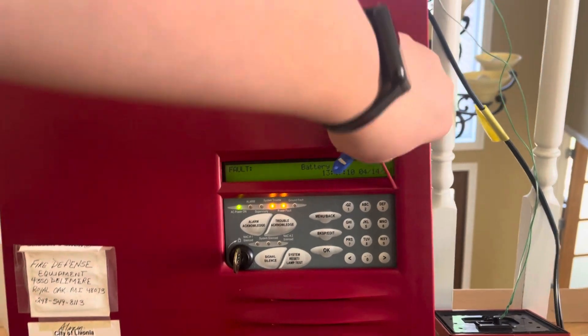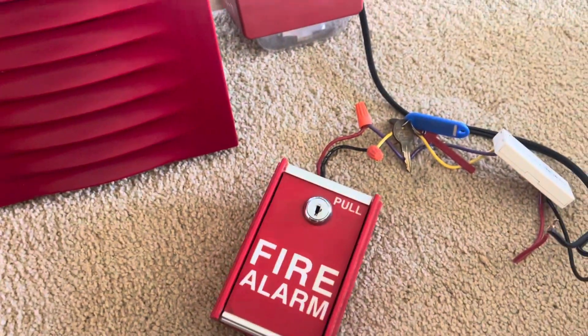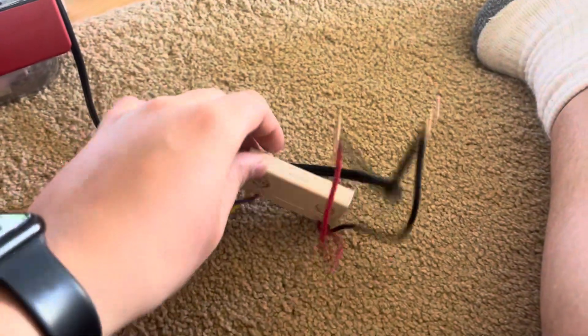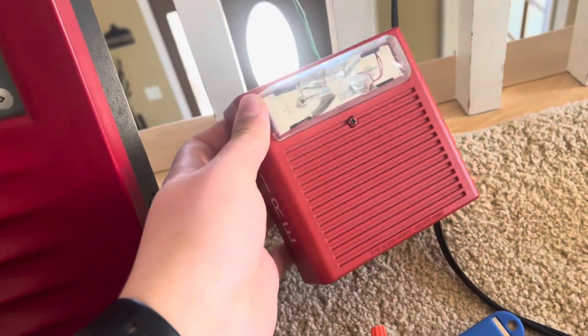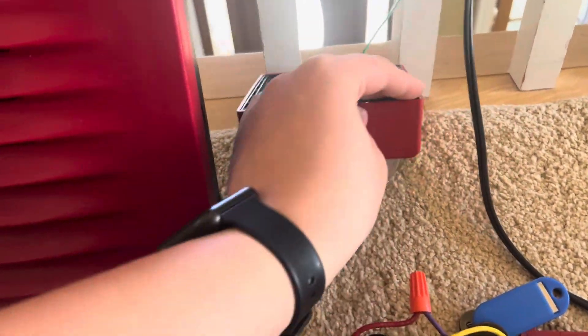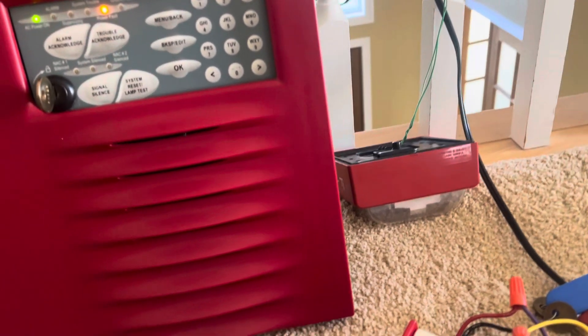Close this back up. And I do not have any of the original devices other than this pull station connected right now. It is addressable. Here's a module. And then I have this Wheelock hooked up to it just - I have it hooked up for horn. The strobe's kind of broken on that unit so it won't go off.